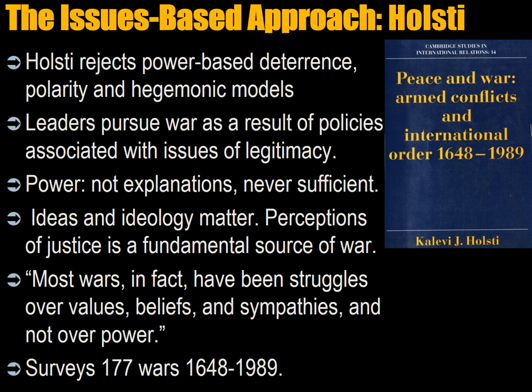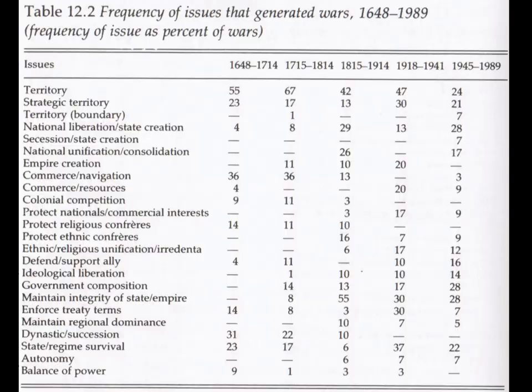Holsti surveys 177 wars between 1648 and 1989 — starting in 1648 because that's the Treaty of Westphalia, which is the birth of the modern state system, when people gave their allegiance to the state and were no longer willing to die for the post. Here you can see a list of issues on the left and columns for different periods on the right, showing the evolution and change over the centuries in why countries went to war.